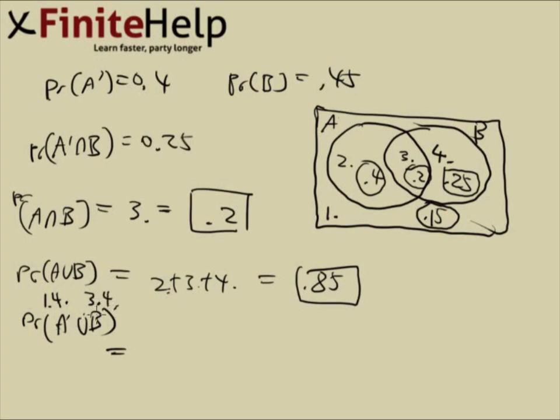So what's A prime union B? Well, I want everything that's included once or twice, so it's one and three and four. So now just add them up, one, three and four. Well, that's 0.6. And here are your final answers.